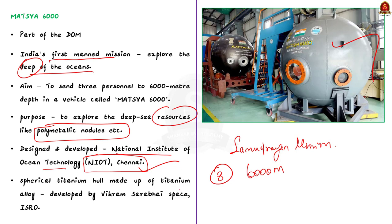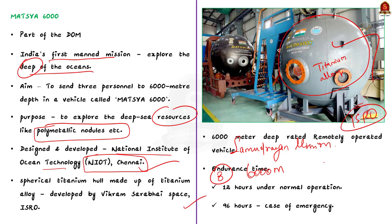Matsya 6000 has a spherical titanium hull made of titanium alloy, developed by Vikram Sarabhai Space Centre (ISRO). It is equipped with a life support system, support for floating underwater, and provisions for collecting underwater samples. It has a 6000-meter deep-rated remotely operated vehicle. The vehicle has an endurance time of 12 hours under normal operation and 96 hours in case of emergency for human safety.